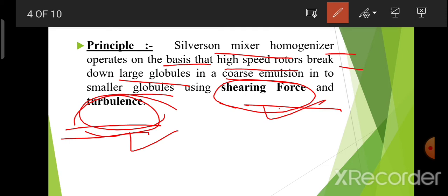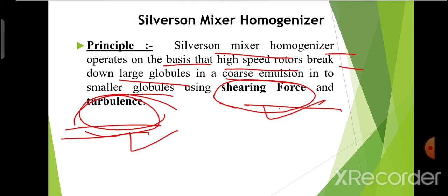Means, जो इसमें flow होगा liquid का, वो smooth and laminar नहीं होगा — fluctuation होगी fluid की velocity में।